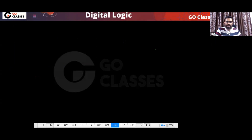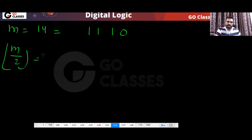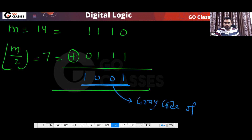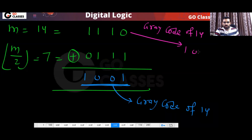Any number you can take. For example, if you take M equal to 14, that is 1,1,1,0. M divided by 2 is 7, that is 0,1,1,1. Now you do their bitwise XOR and you get the Gray code of 14. From here also you can directly find the Gray code of 14 — the same answer you will get.